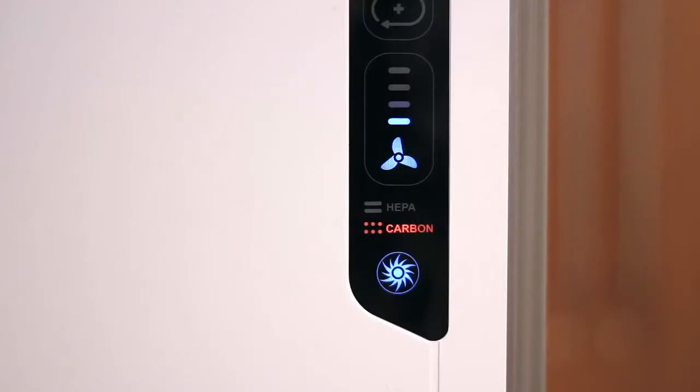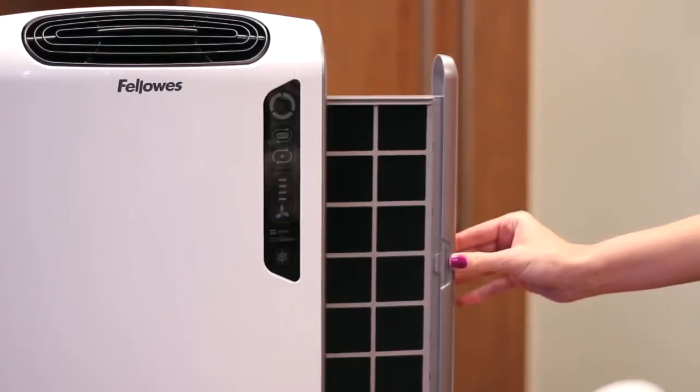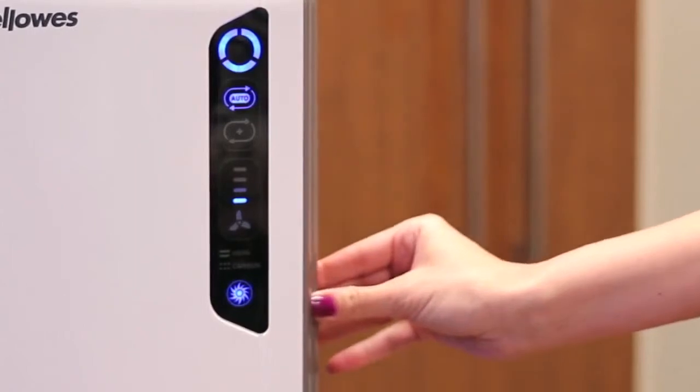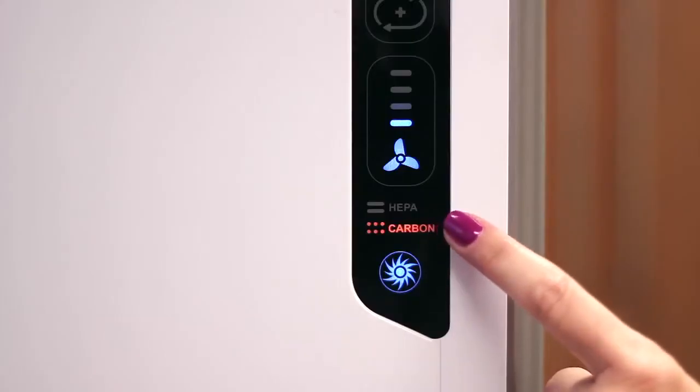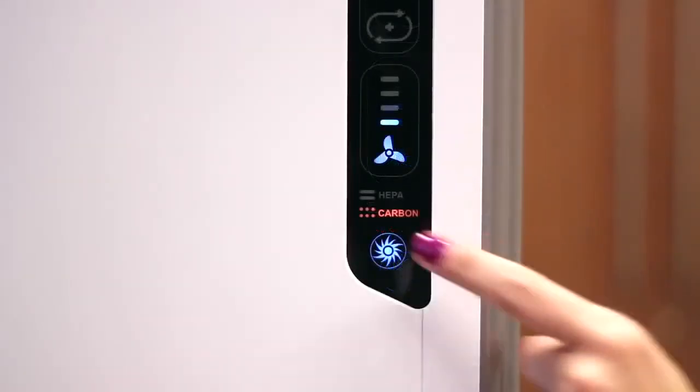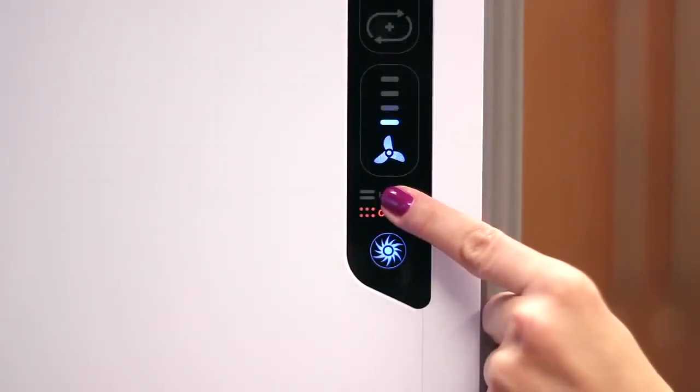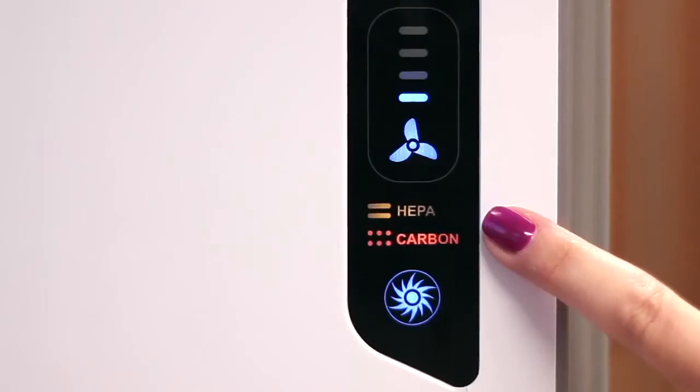The next step is to reset the filter indicator light from your AeraMax air purifier. Make sure the filter drawer is securely closed and the air purifier is on. Locate the filter icons on the display panel. Next, press and hold the filter icons for 3-5 seconds until you hear a short beep. At this time, the HEPA filter icon will flash amber.